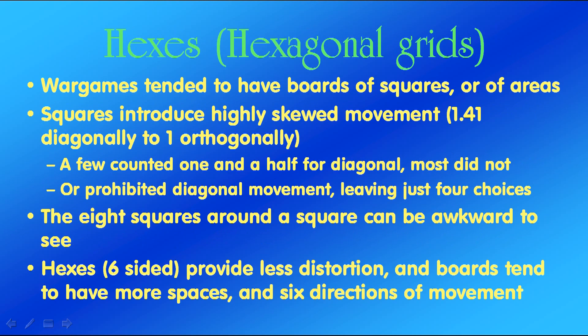Another innovation was hexes — that is to say, hexagonal grids. War games before tended to have boards of squares or areas. Squares unfortunately introduced highly skewed movement: it's 1.41 diagonally to 1 orthogonally, orthogonal being up, down, and sideways. A few games counted one and a half for diagonal; most did not. Some games prohibited diagonal movement, leaving just four choices. Also, the eight squares around a square can be awkward to see, especially if you're supposed to go around it. Hexes, which are six-sided, provide less distortion, and boards tend to have more spaces and six directions of movement. Hexes themselves are not without distortion, but much less.